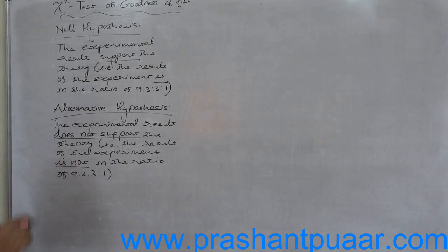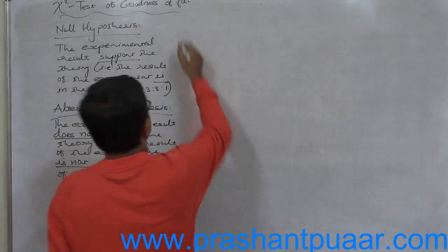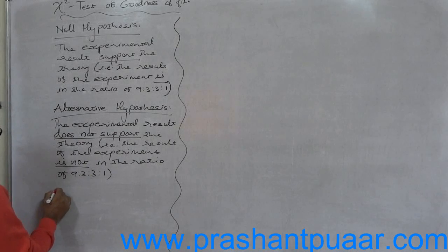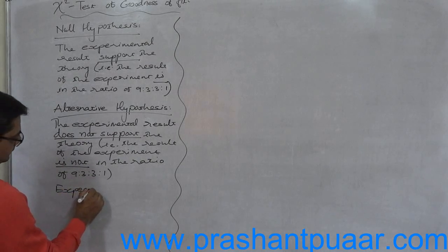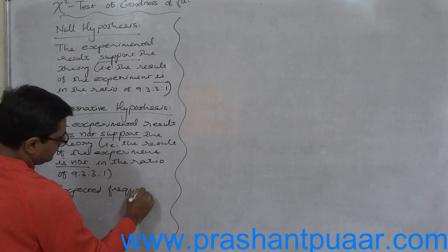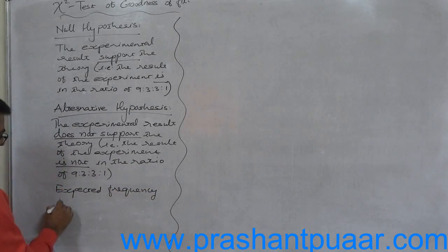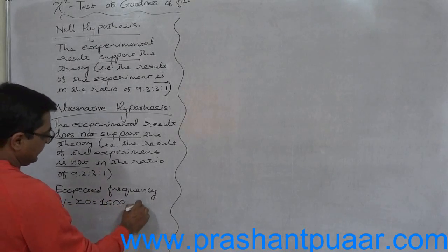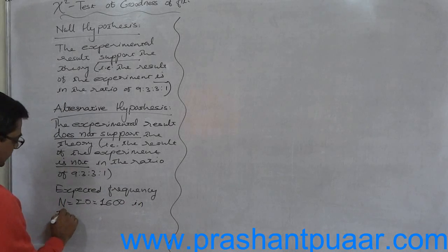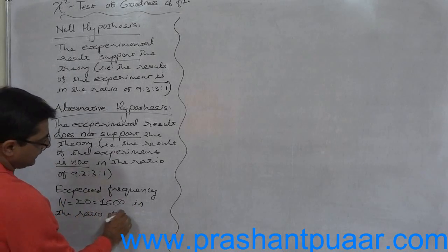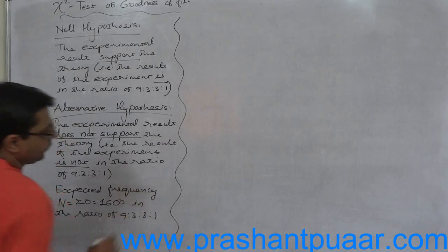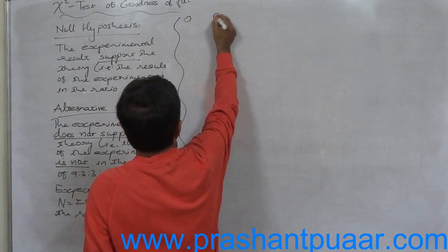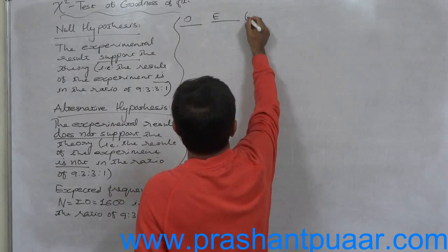Now what is the expected frequency? Sigma O, that is 1600, in the ratio of 9:3:3:1. So now we will directly calculate with the table.